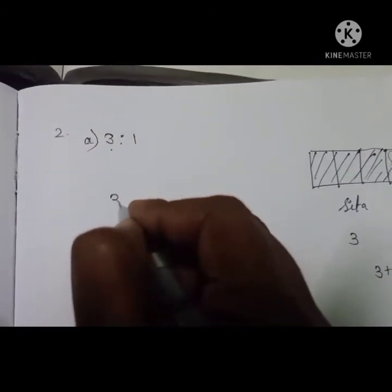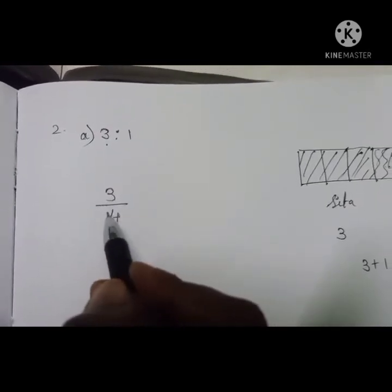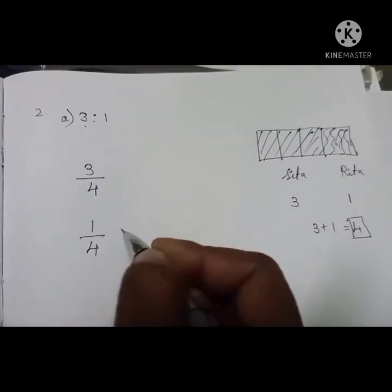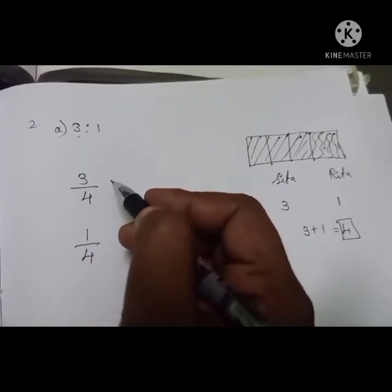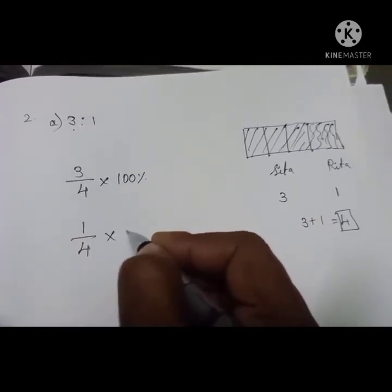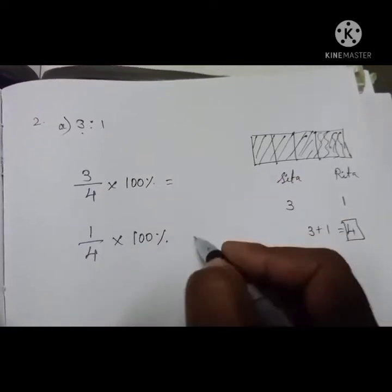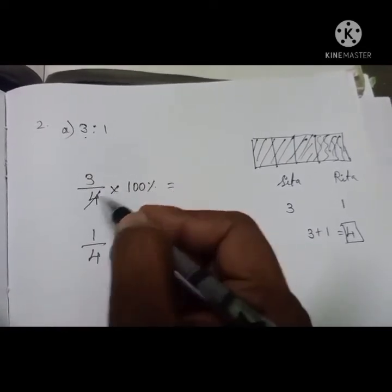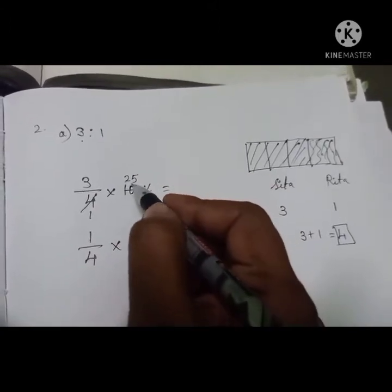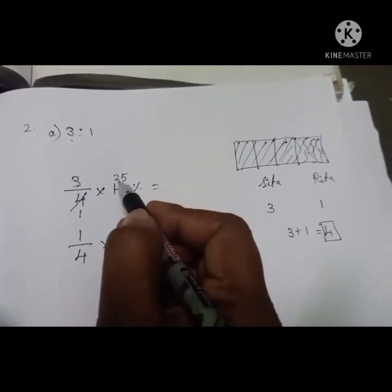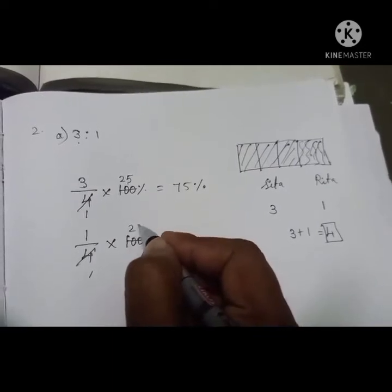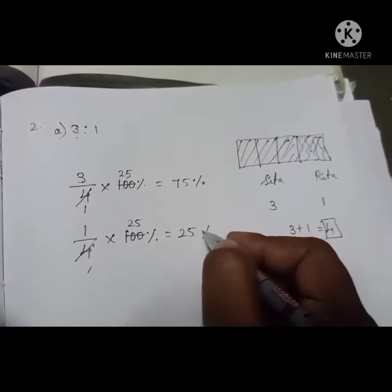We can write Sita's share as 3 by 4, and Rita's share as 1 by 4. To convert into percentage, multiply by 100. So 3 by 4 into 100 gives 75 percent, and 1 by 4 into 100 gives 25 percent.